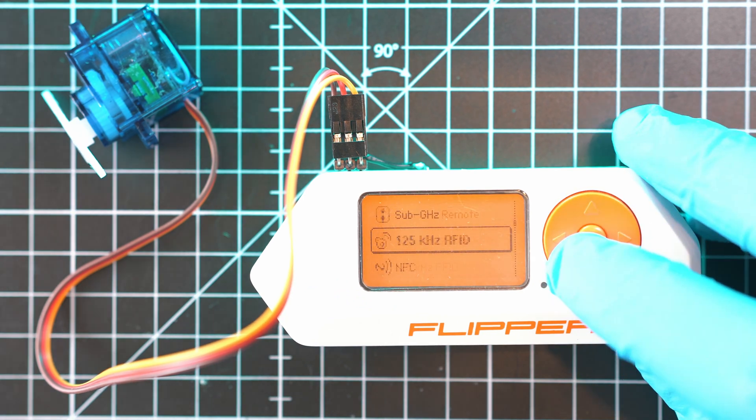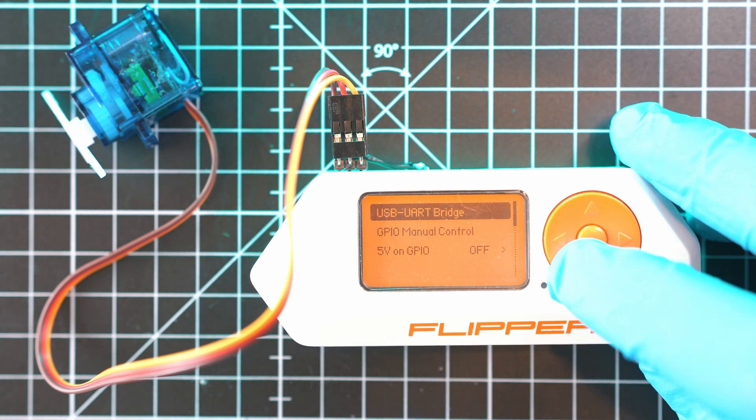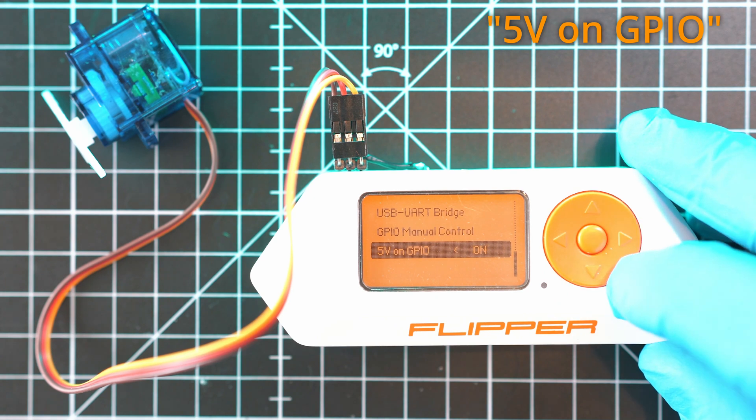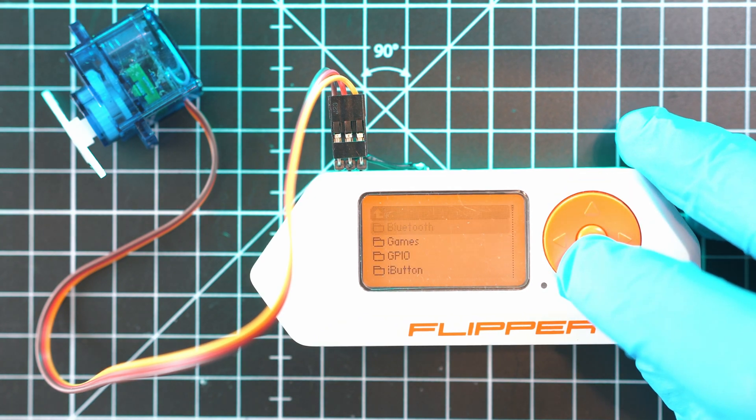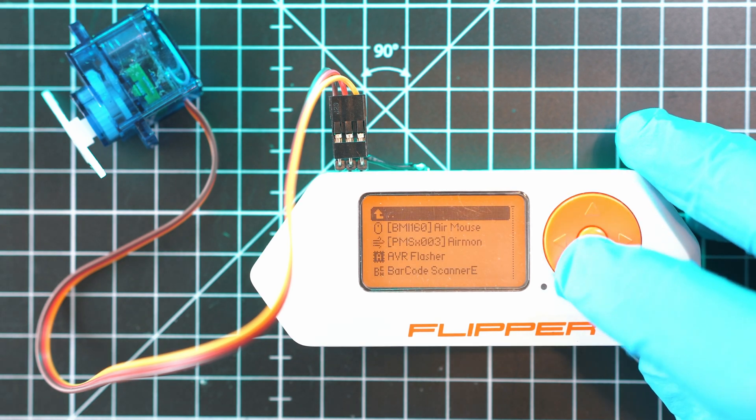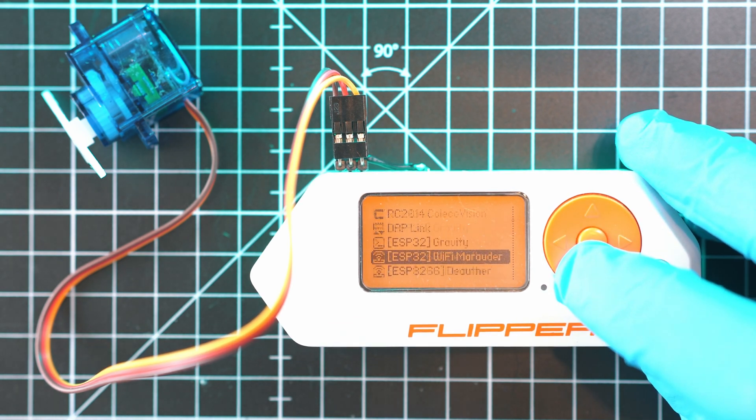Flipper on. Go GPIO and turn 5 volts on GPIO on. Now, go back to applications. Then GPIO. And search for servo tester. And servo tester too.